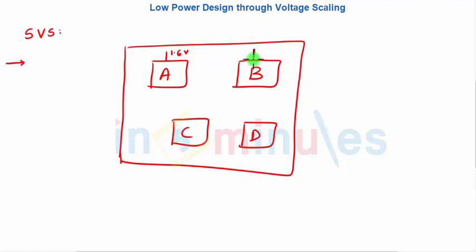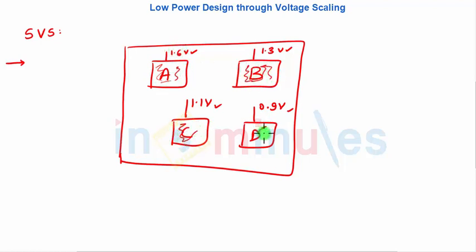Say we have four voltage domains with a nominal VDD of 1.8V. Domain A operates at 1.6V, domain B at 1.3V, domain C at 1.1V, and domain D at 0.9V. These voltage levels are identified such that the circuit functions correctly and performance is not degraded, while dynamic power is also reduced. All blocks in each domain operate at their fixed voltage, set at design time — which is why this is called static voltage scaling.